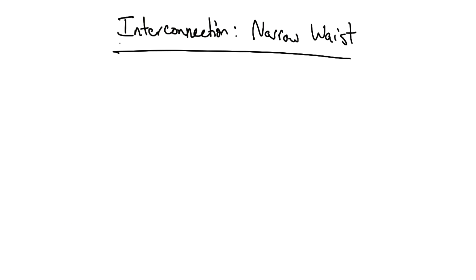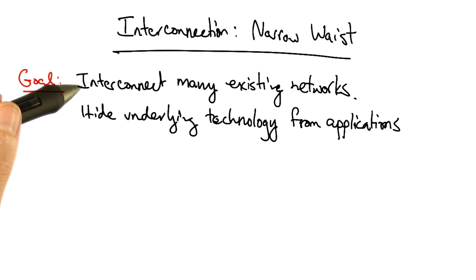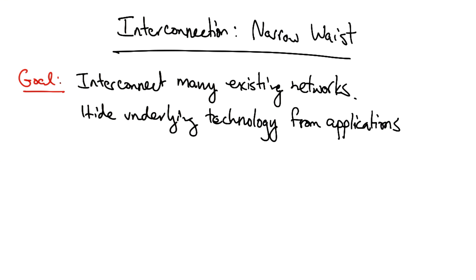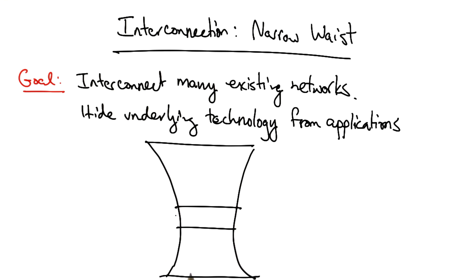Let's now take a look at the second important fundamental design goal of the internet: interconnection, and how interconnection is achieved with a design principle called the narrow waist. One of the main goals was to interconnect many existing networks and to hide the underlying technology of interconnection from applications. This design goal was achieved using a principle called the narrow waist.